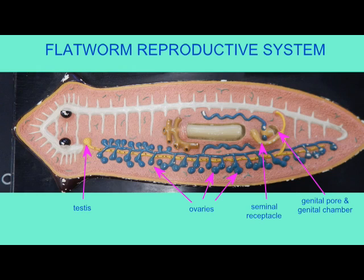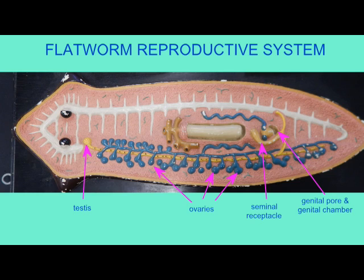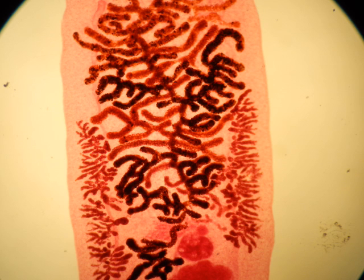Usually two separate flatworms need to copulate, and both donate sperm through a genital pore, which will then fertilize ova. In some flatworms, the ova can be stored in a branched structure known as a uterus, where embryos develop further.